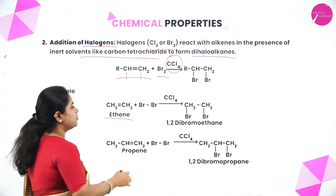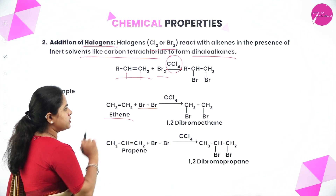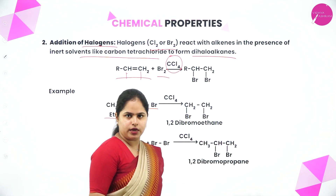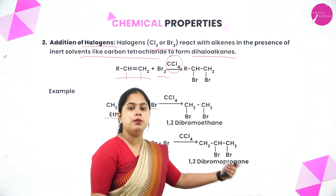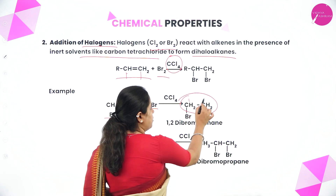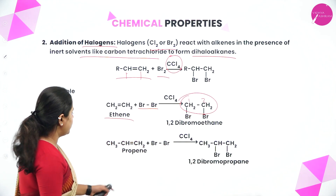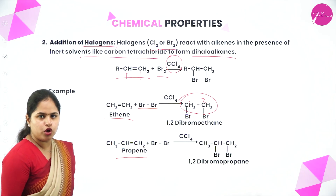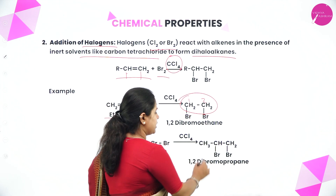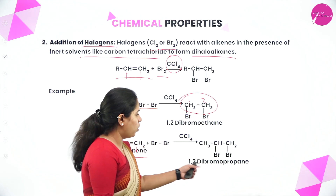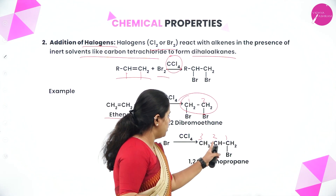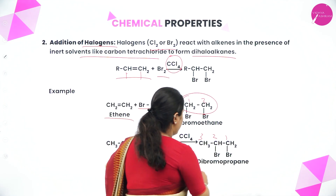Taking the example of ethene, CH2=CH2, to which we add a bromine molecule in the presence of CCl4: the double bond breaks, one bromine added here, one bromine added here, giving CH2Br–CH2Br, which is 1,2-dibromoethane. For propene, CH3–CH=CH2, adding one molecule of bromine in the presence of CCl4 gives CH3–CHBr–CH2Br, which is 1,2-dibromopropane.